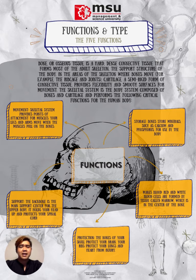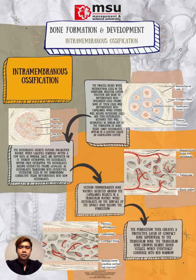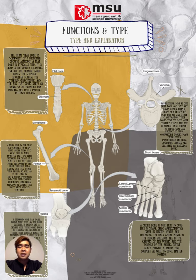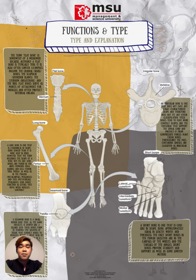Now let's look at the types and classification of bones. The 206 bones that compose the adult skeleton are divided into five categories based on their shapes. Their shapes and functions are related such that each categorical shape of bone has a distinct function. A long bone is cylindrical in shape, being longer than it is wide. The term describes the shape of a bone, not its size. Long bones are found in the arms — humerus, ulna, radius — and legs, as well as in the fingers and toes. Long bones function as levers; they move when muscles contract.